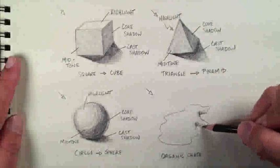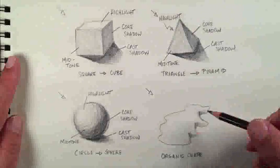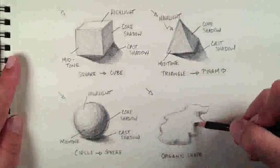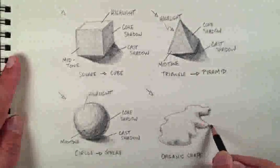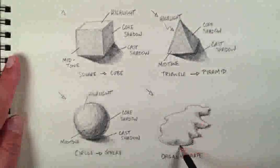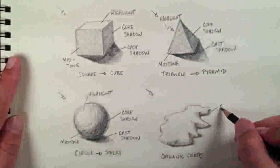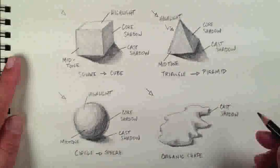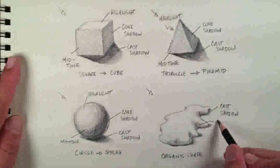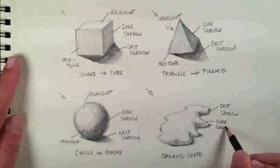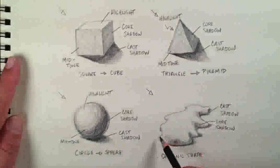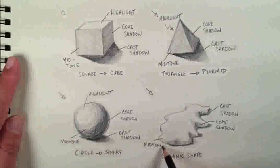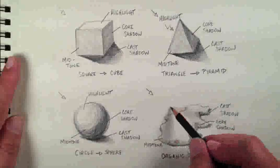When I'm adding shadow to this organic shape, I'm thinking about where my light source is originating from. I'm putting the shadow on the opposite side from that light source on the object. I'm also putting the cast shadow on the surface, away from the organic form, on the opposite side of the light source. Here we can see our cast shadow, core shadow, a less prevalent mid-tone, and in the case of this demonstration, a large area of highlight.